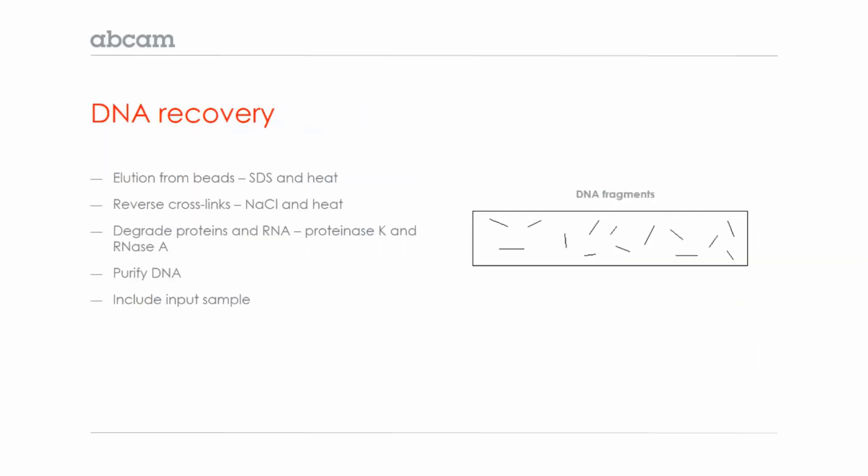Finally, you need to recover the DNA that was pulled down as part of the antibody protein complex. First, you elute the antibody from the beads using SDS and heat. Then you reverse the cross-links if you're performing cross-linking ChIP. This is done with salt and heat.